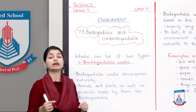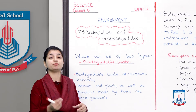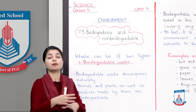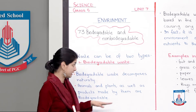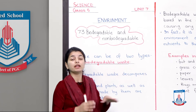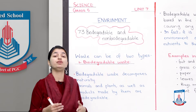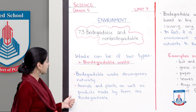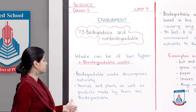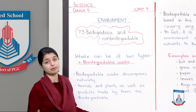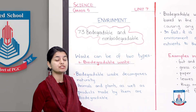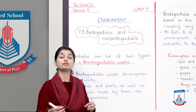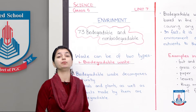Decomposition means it will break down completely — it will disperse and that thing will eventually finish. So what is decomposition? It is the breaking down and the releasing of nutrients from different biodegradable objects. Animals and plants, as well as products made by them, are biodegradable — all of them can be decomposed.